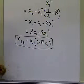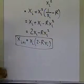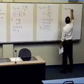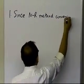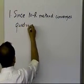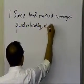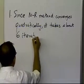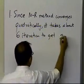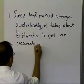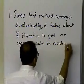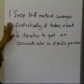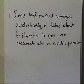So there are several things which are used to try to make it computationally efficient. One of the things I want to mention is that since Newton-Raphson method converges quadratically, it takes about six iterations to get an accurate value in double precision. So that's the good part of it — since the Newton-Raphson method converges quadratically, it will take about six iterations to get an accurate value in double precision.